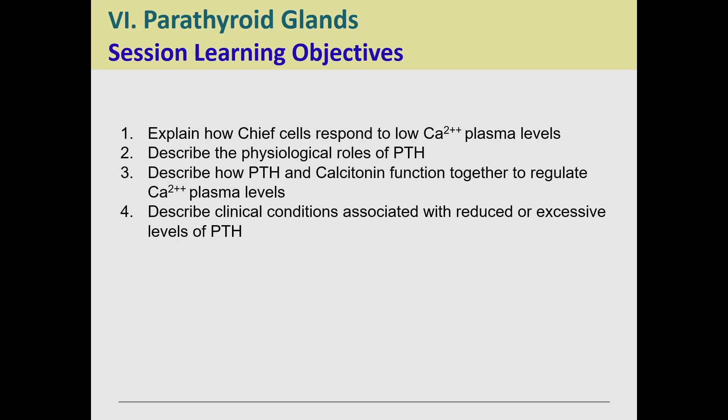On to the next: the parathyroid glands. These pair very well with the thyroid, so we'll talk about their relationship, chief cells and what they do when it comes to low calcium, and how PTH comes into play. We'll also cover PTH and calcitonin working together to maintain calcium blood levels, and what happens when your PTH is off.